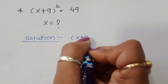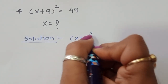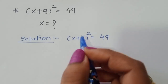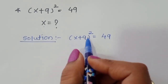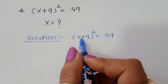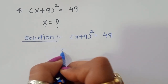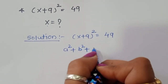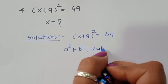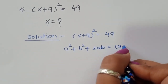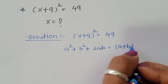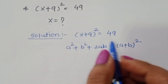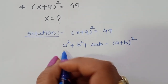x plus 9 whole square is equal to 49. This is of the form (a + b) whole square. The formula is: a plus b whole square equals a square plus b square plus 2ab. Now we have to substitute this value here, and we will get x square...